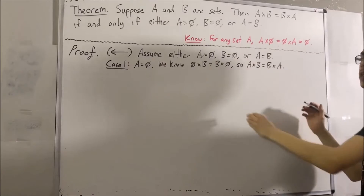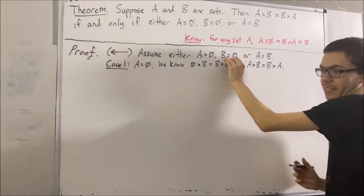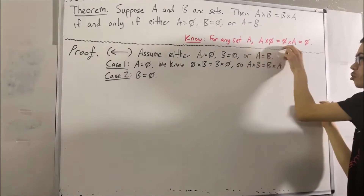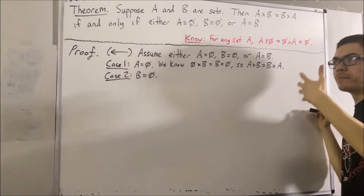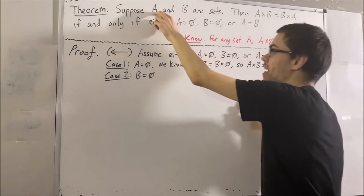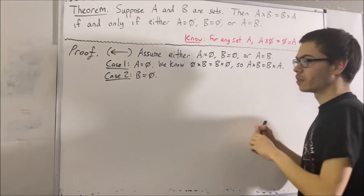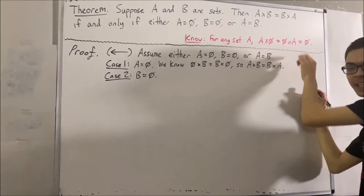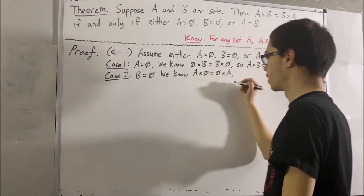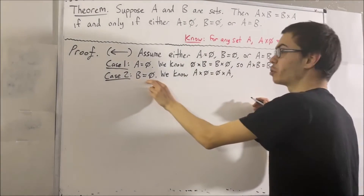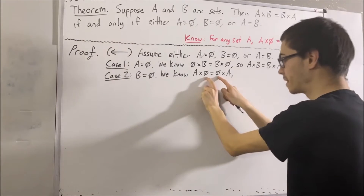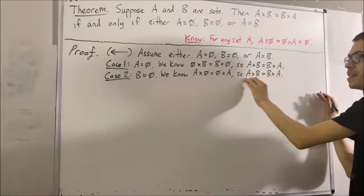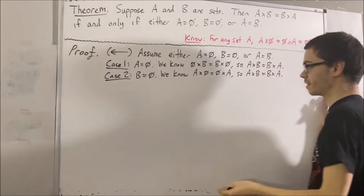Now, let's move on to our second case, which is if B is equal to the empty set. Again, this statement is true for any set, so it must be true for the set A we're working with in our proof. So, we know that A times the empty set is equal to the empty set times A. And since B is equal to the empty set, we can replace the empty set with B. And again, we have proven that A times B is equal to B times A in this case.